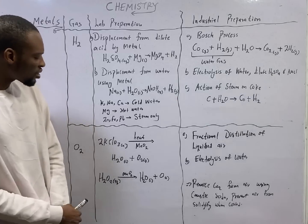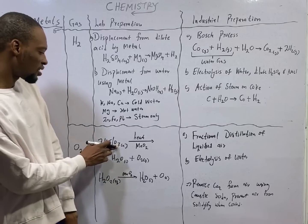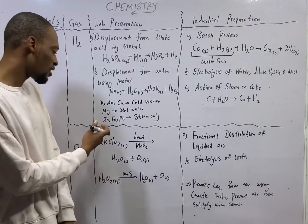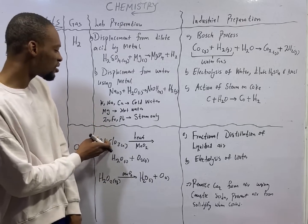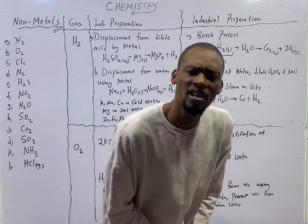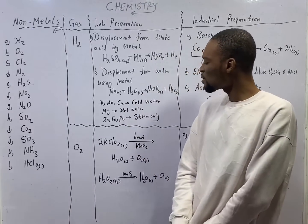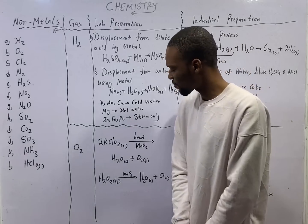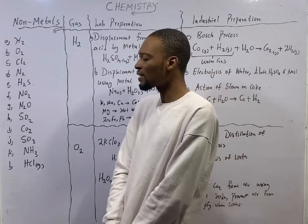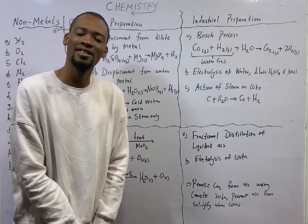Now potassium trioxochlorate works. This is potassium trioxochlorate 5. When you heat potassium trioxochlorate 5 in the presence of catalyst manganese 4 oxide, you will get water and oxygen gas. When potassium trioxochlorate 5 is heated in the presence of a catalyst manganese 4 oxide, oxygen gas is given off.